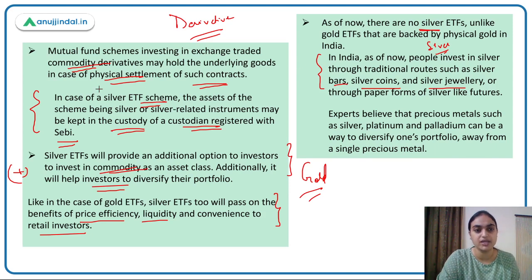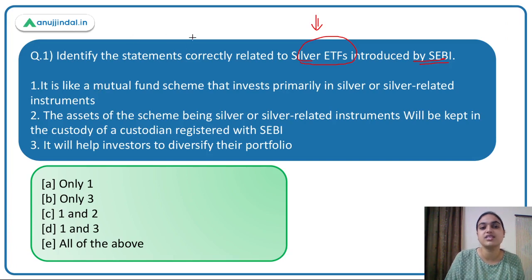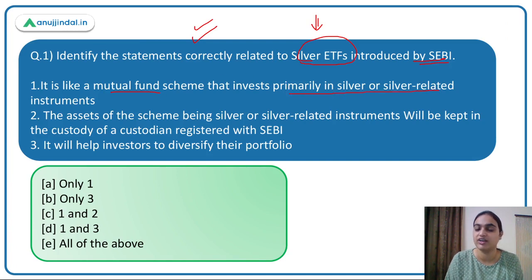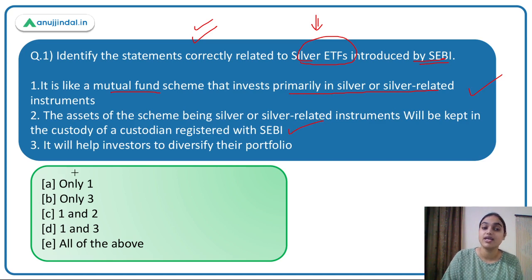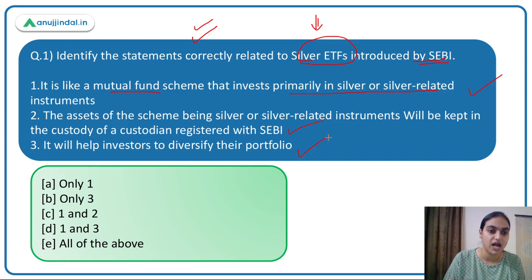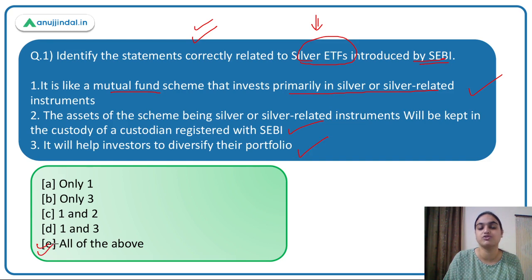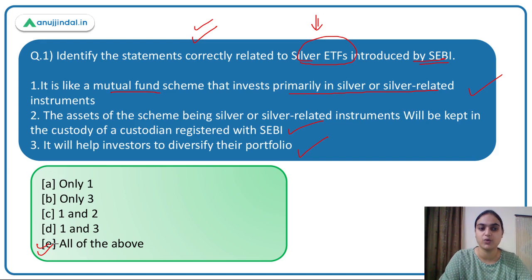Coming back to the first question: silver ETF is a mutual fund investing primarily in silver or silver-related instruments — this is correct. The assets of the scheme will be kept in custody of a custodian registered with SEBI — this is also correct. It will help investors diversify their portfolio — this is correct. So all three statements are correct; the answer is option E.